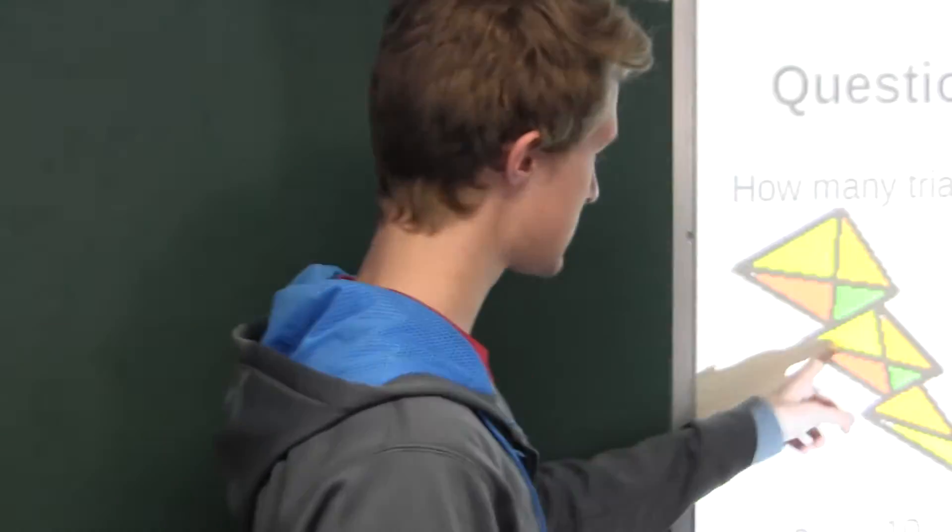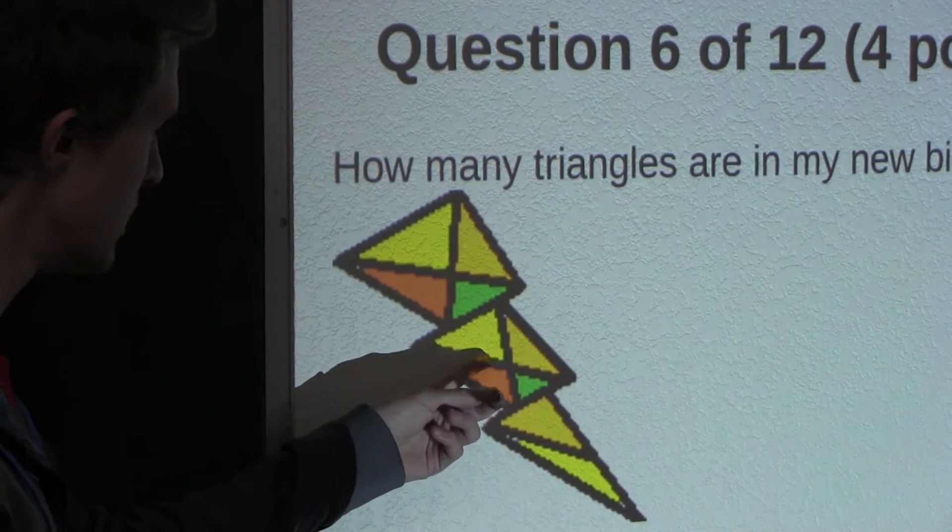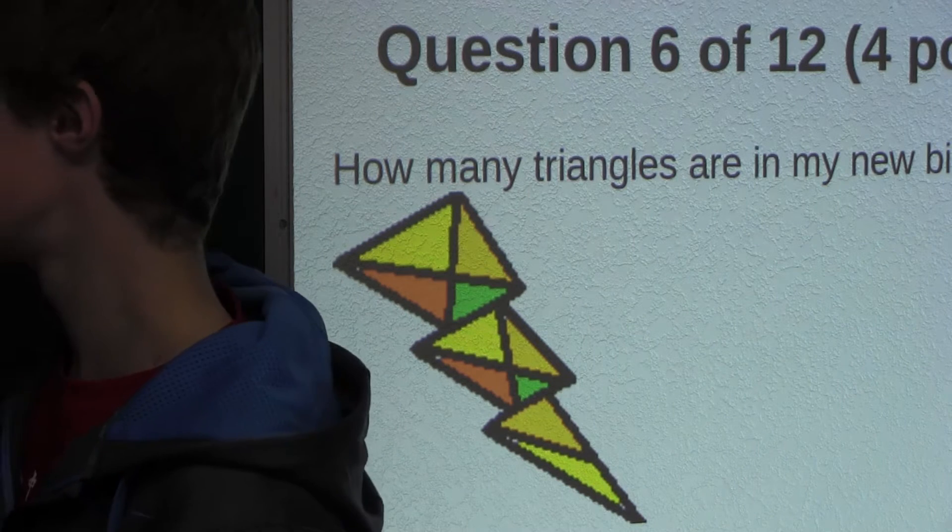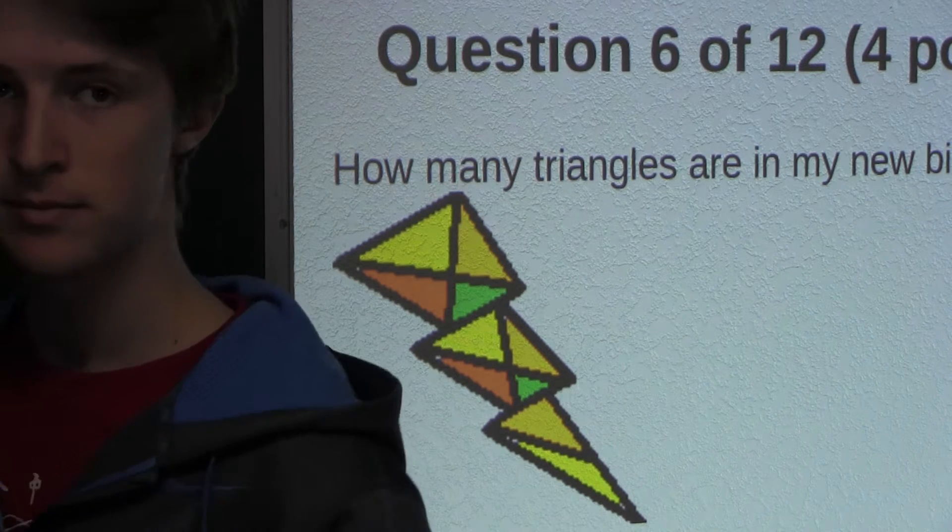And now in the second quadrilateral, this is just the exact same type, just smaller, so again that would be another 4.